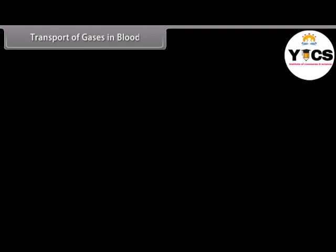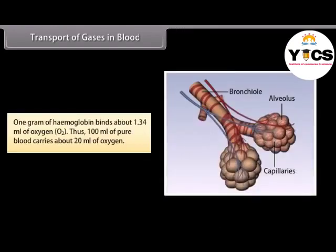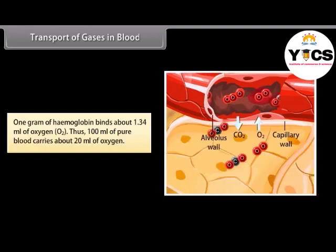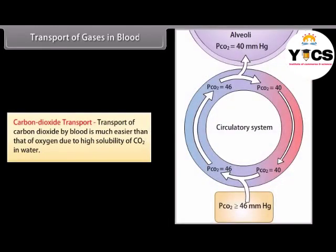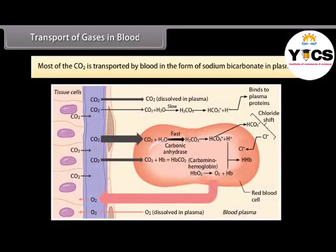98.5% of oxygen is transported by blood with the help of the respiratory pigment hemoglobin present in erythrocytes. One molecule of hemoglobin can carry as many as four oxygen molecules, and one gram of hemoglobin binds about 1.34 ml of oxygen; thus 100 ml of blood carries about 20 ml of oxygen. Transport of carbon dioxide is much easier than oxygen due to the high solubility of CO2 in water. About 7% of CO2 is transported dissolved in plasma, 23% as carbaminohemoglobin, and 70% as bicarbonates. Most CO2 is transported as sodium bicarbonate in plasma.